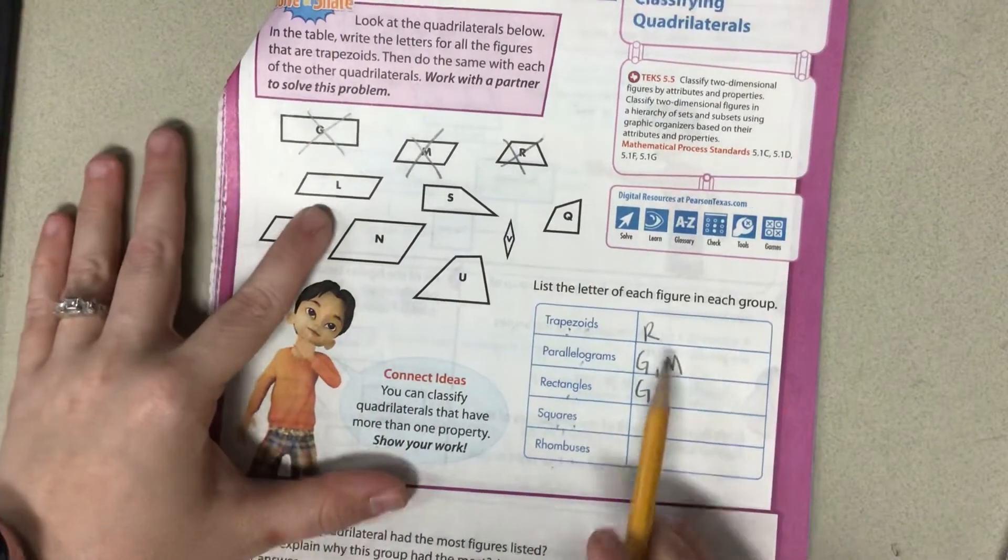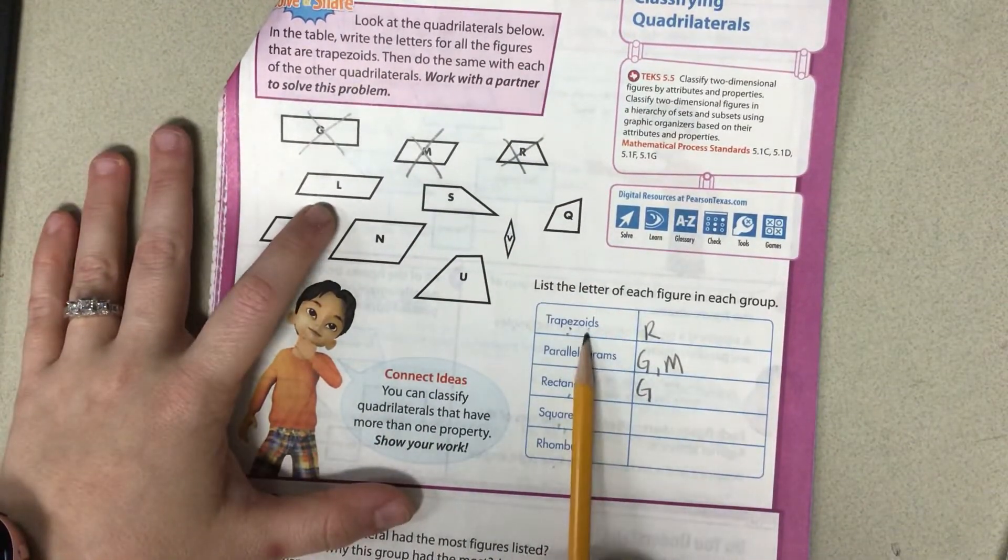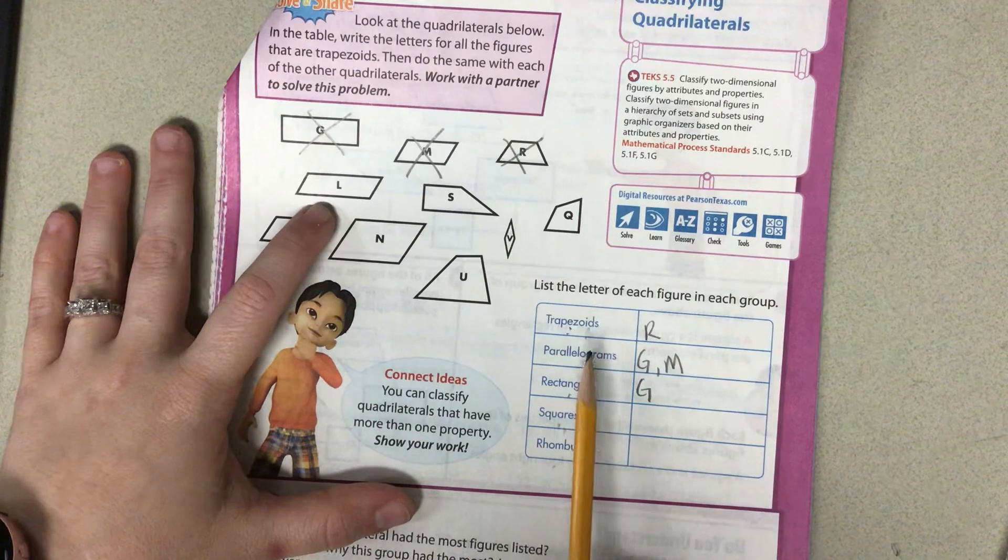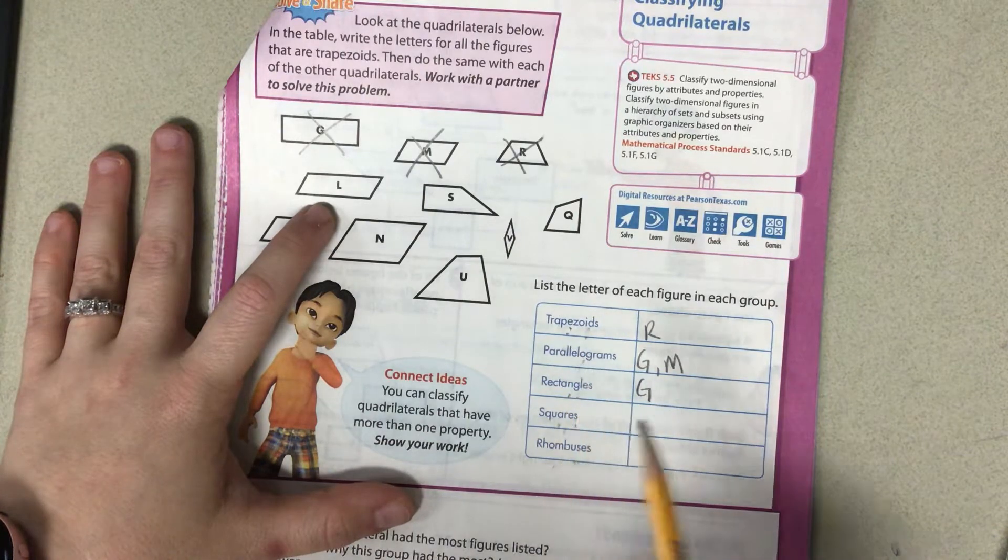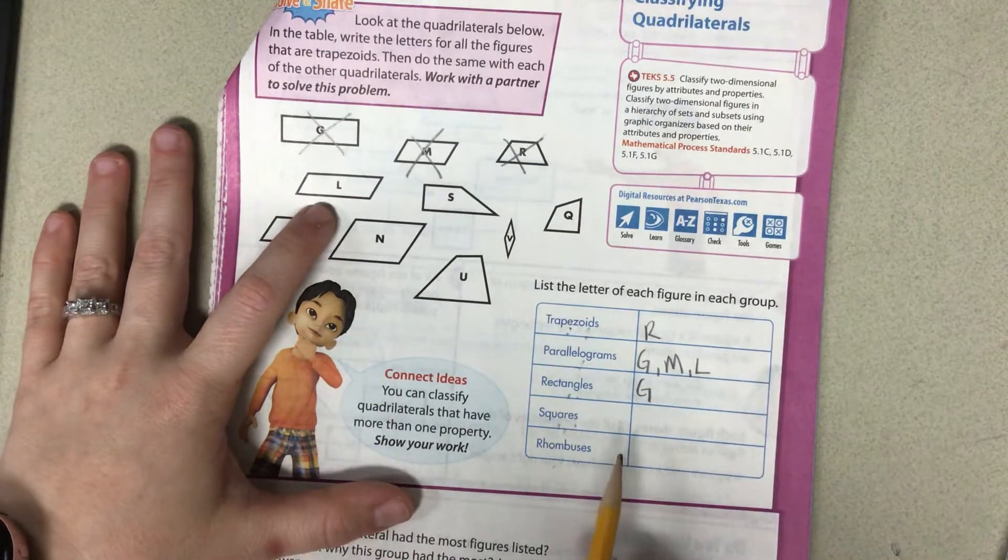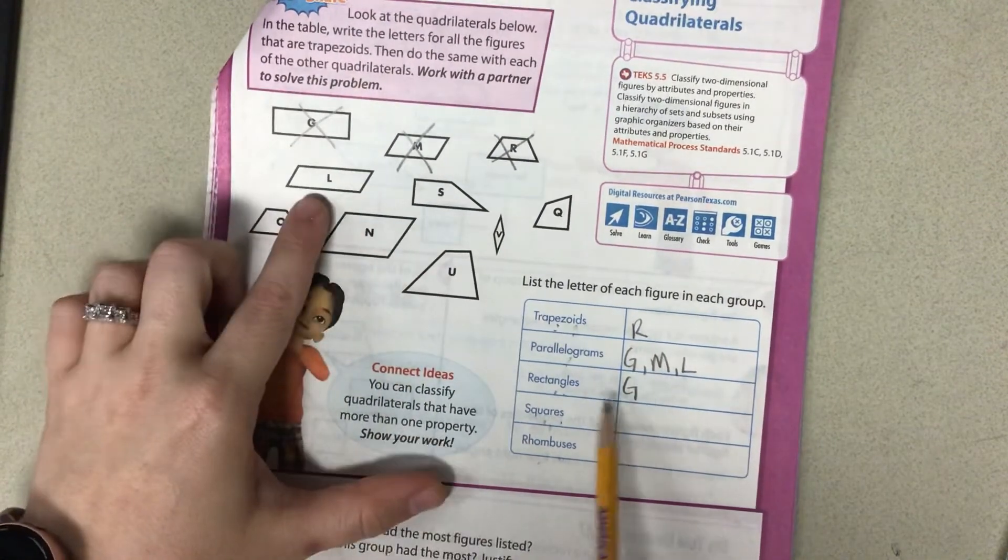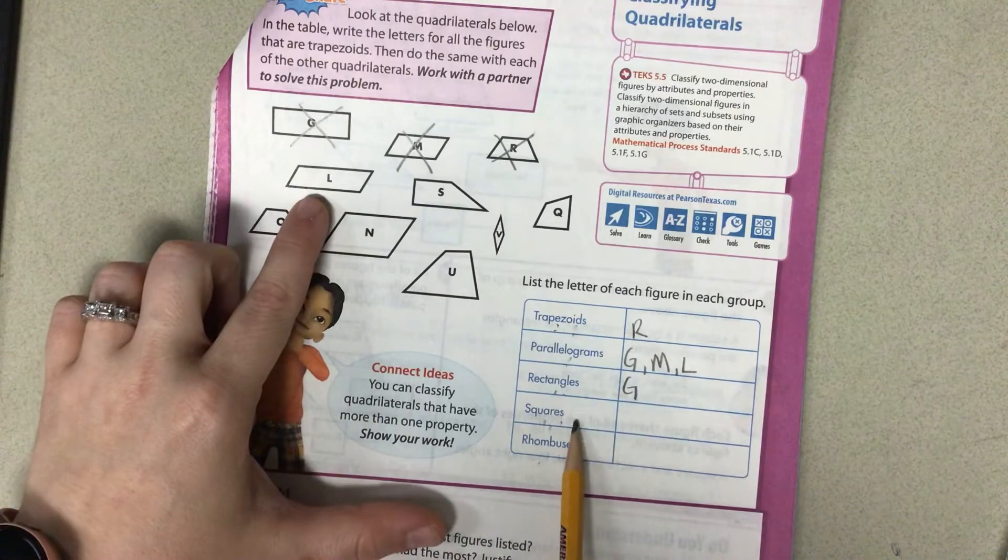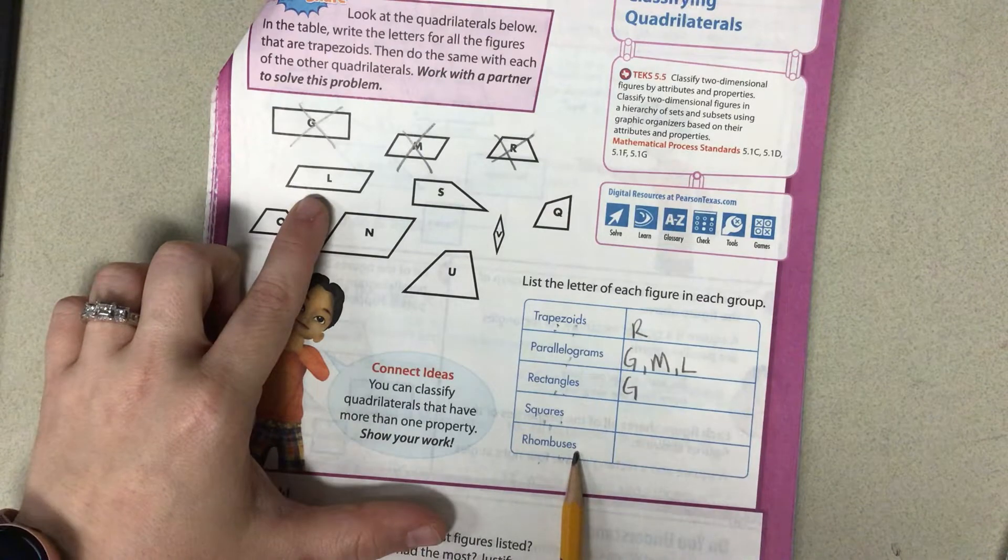L. One pair of parallel sides? No. All sides parallel? Yes. Oops, sorry, we're still on L. Four right angles? No. All sides the same length? No.